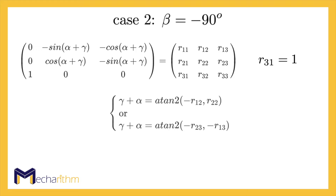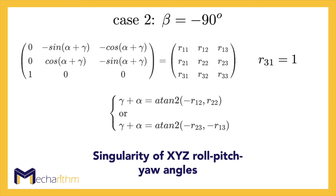Beta equal to 90 degrees and minus 90 degrees is the singularity of the XYZ Roll-Pitch-Yaw angles representation for SO(3), meaning that there are infinitely many sets of Roll-Pitch-Yaw angles for a given rotation matrix at those angles. This is problematic in practical applications where the robot's controller will be confused at those configurations and can generate solutions that cause problems. The inverse solution for the XYZ Roll-Pitch-Yaw angles is the same as the inverse solution for the ZYX Euler angles discussed in the previous lesson. Although the results are the same, the two have totally different physical interpretations.